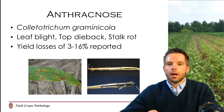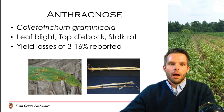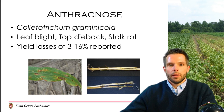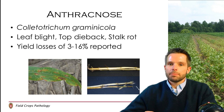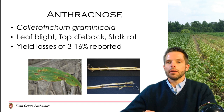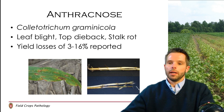Anthracnose is caused by the fungus Colletotrichum graminicola, and the disease can actually take on three different types: leaf blight, top dieback, and also stalk rot. Yield losses can range from somewhere between 3 and 16% on corn here in Wisconsin due to anthracnose.